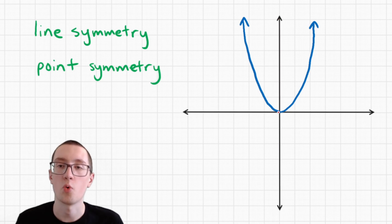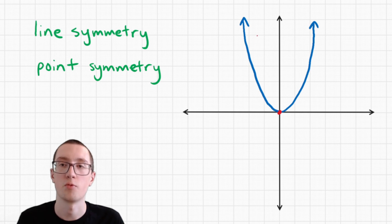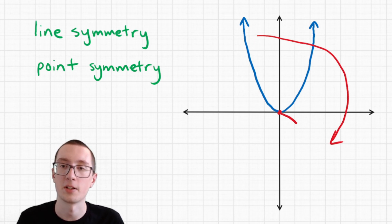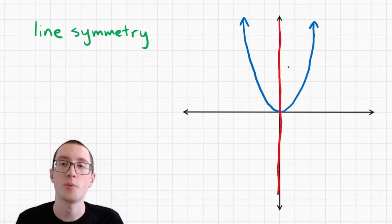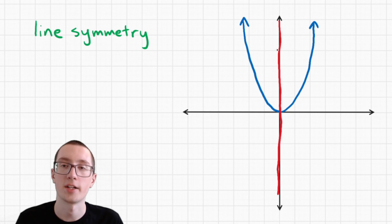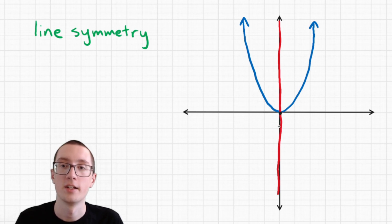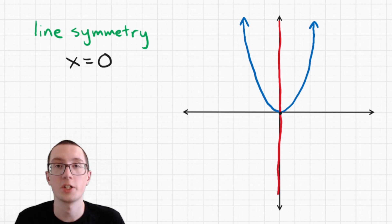Does it have point symmetry? If we put a point here and rotate 180 degrees, this part of the graph would look something like this — and it does not line up with this part of the graph, so no, it does not have point symmetry. But it does have line symmetry, and your homework will probably ask you to write the equation of the line. Since it's a straight up-and-down line, x is always zero on this line, so the equation is x equals zero.